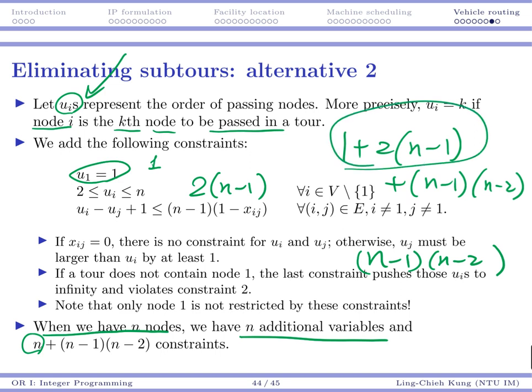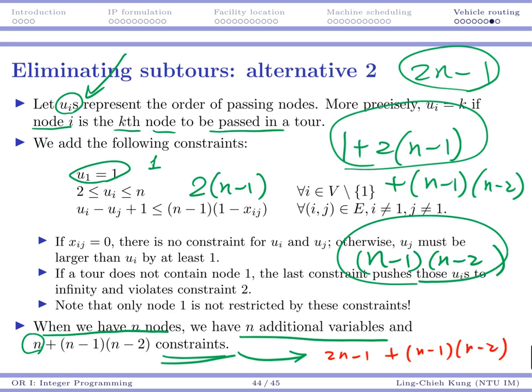So collectively, basically I think the number of constraints we have would be 1 plus 2 times (n-1) plus (n-1) times (n-2). So we can see that there is a difference. If I do this, that's going to be 2n-1. So this 2n-1 would be summed to this part. So I would say the number of constraints we need would be 2n-1 plus (n-1) times (n-2). So the exact number actually is not so important. All we want to say is that the number of constraints seems to be smaller. Previously, we have a lot of constraints. The number of constraints is actually exponential. But in this alternative 2, the number of constraints is limited, is at least polynomial.